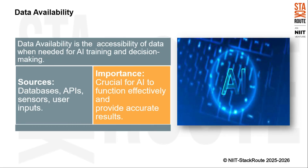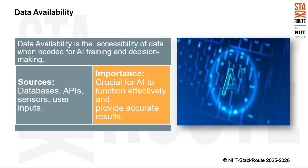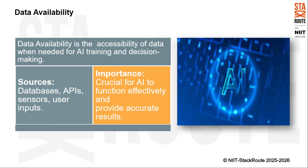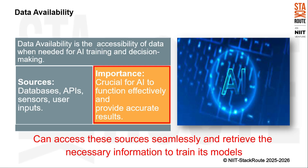Another consideration is data availability, which implies the accessibility of data when needed for AI training and decision-making. In AI, the ability to access relevant data sources — such as databases, APIs, sensors, and user inputs — is crucial for the system to function effectively. For AI training, the system needs to analyze large amounts of data to learn patterns and make predictions. This data can come from databases where historical information is stored, APIs that provide real-time data updates, sensors that collect environmental data, and direct inputs from users.